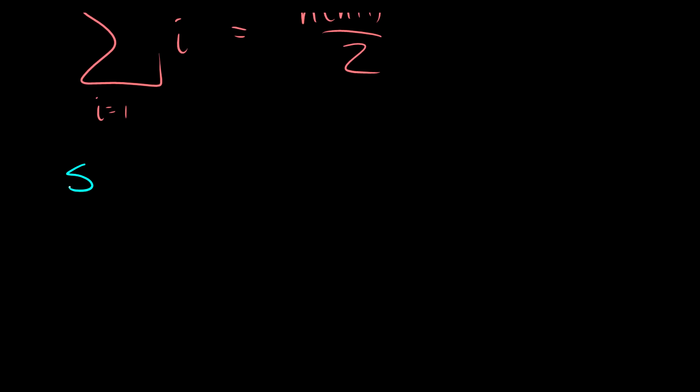We're going to take S. This is going to be equal to 1 plus 2 plus 3 plus 4 all the way up to n. We're going to take the same sequence, except we're going to take it backwards. So this is n plus (n-1) plus (n-2) all the way up to plus 1.